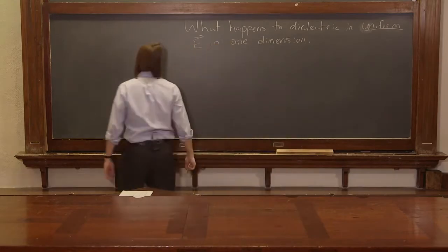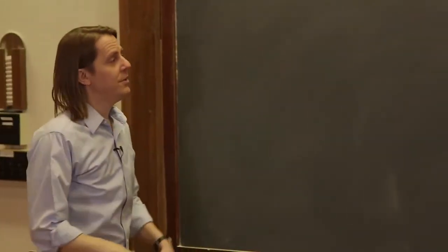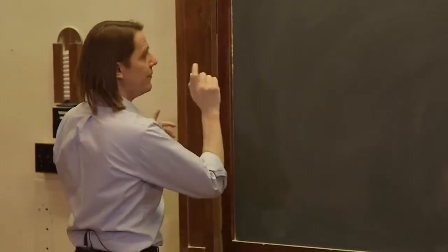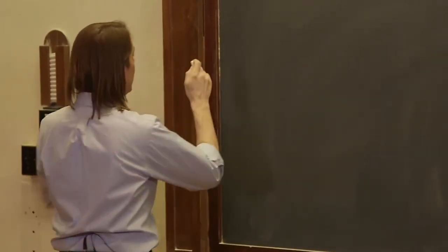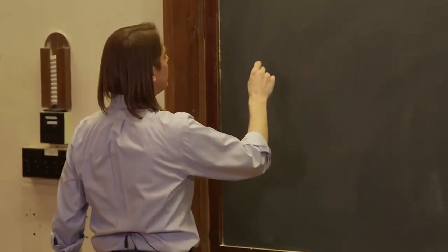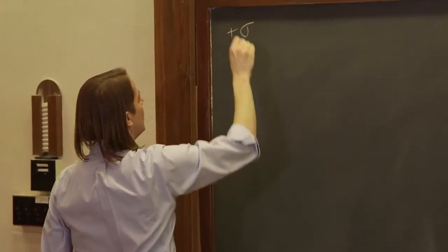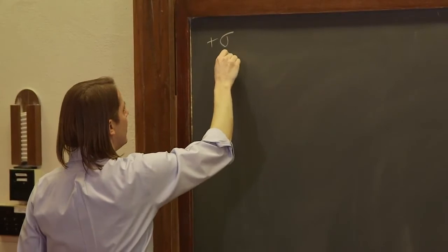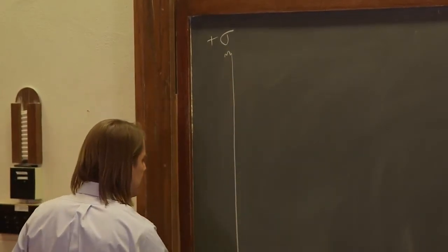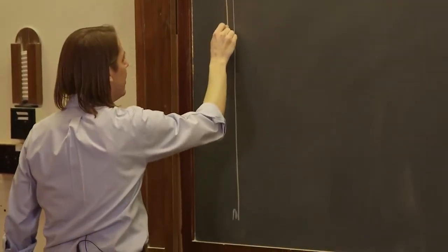All right, so one dimension means everything is going to be planar, so the field itself will be generated by two planes of charge. We'll make it nice, it'll have a charge density sigma, and I'll draw it kind of with a hash mark like that to imply that it goes on forever.